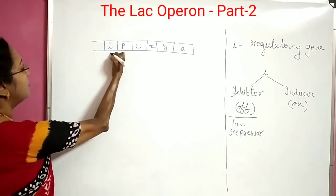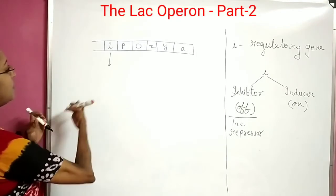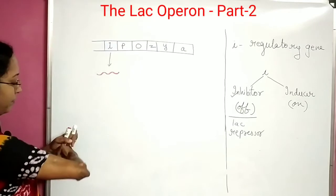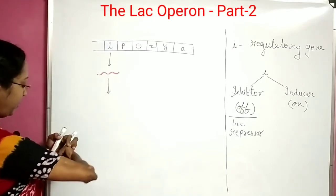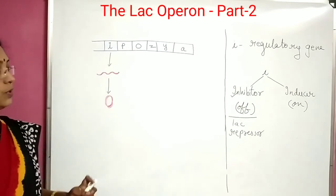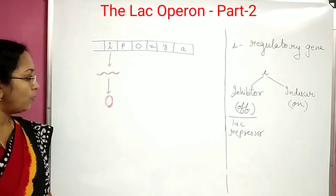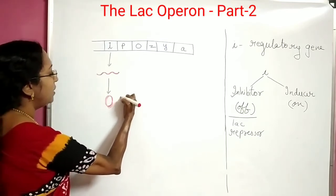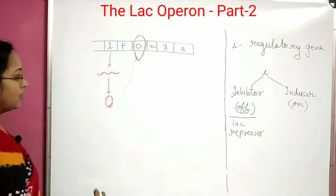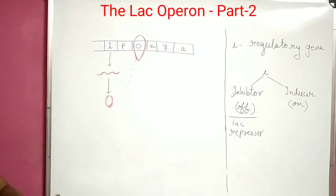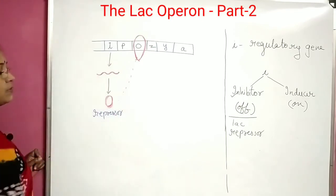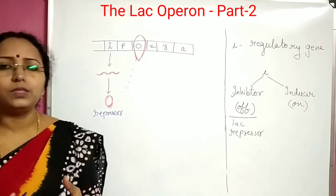The I gene first produces a repressor mRNA, and from this repressor mRNA, a repressor protein is produced. This repressor protein then goes and binds to the operator region. The repressor protein has a high affinity towards the operator.